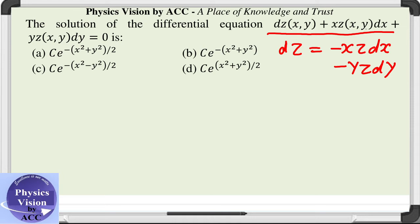I have taken two terms on the right-hand side and we got this equation. Now, making use of the variable separable technique, we got the solution term as dz/z = -x dx - y dy.